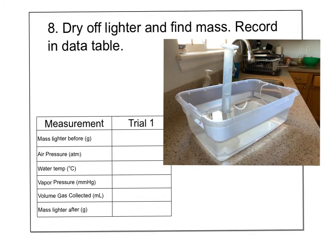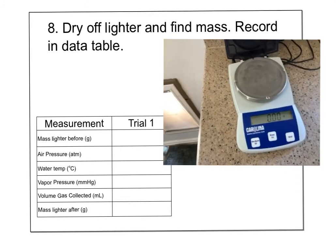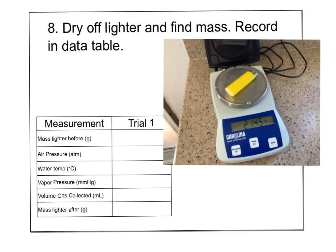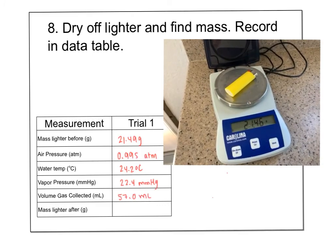Blowing to get any remaining water droplets out, then zeroing the balance. The lighter after reads 21.45 grams. The display briefly showed 21.46 but it's hovering at 21.45, so we'll record 21.45 grams as the after mass.